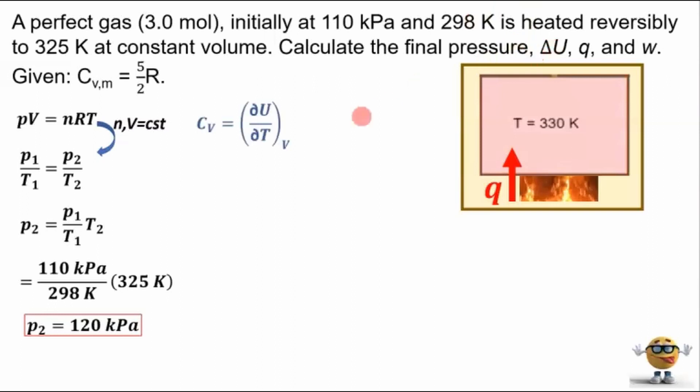And heat capacity at constant volume equals the partial derivative of internal energy with respect to temperature, holding volume constant. Now, what we want to do is we want to solve for the change in internal energy. So to do that, we'll first multiply both sides by dT, and that's what we have here.